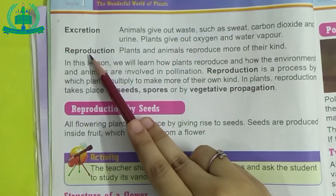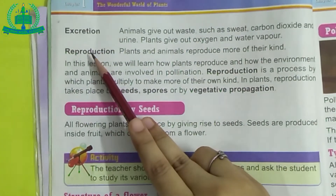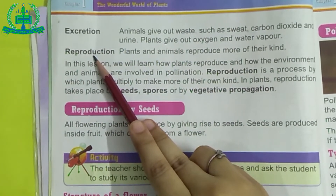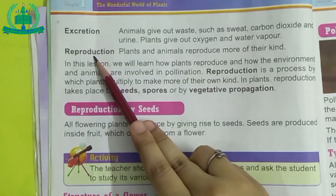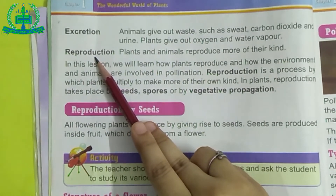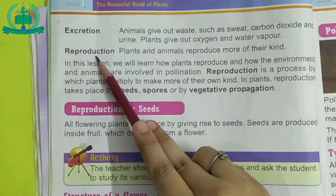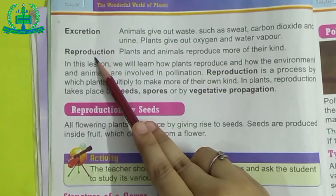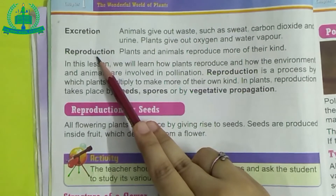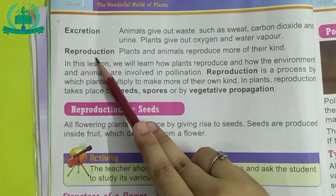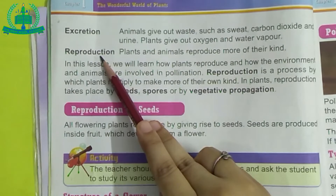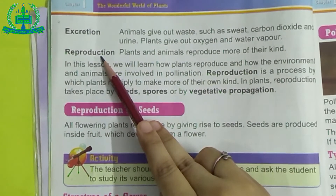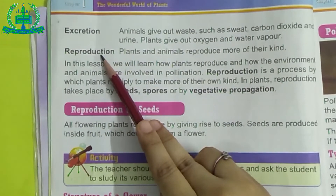Next: Reproduction. What is reproduction? Reproduction is a process by which plants and animals multiply to make more of their own kind. In plants, reproduction takes place by seeds, spores, or by vegetative propagation.